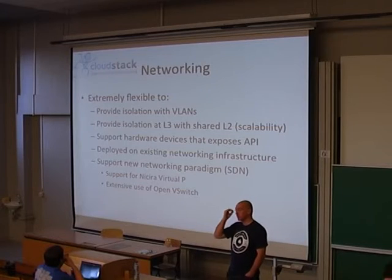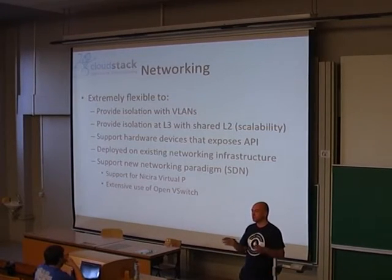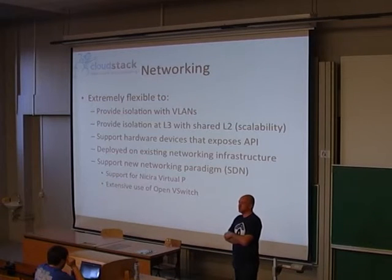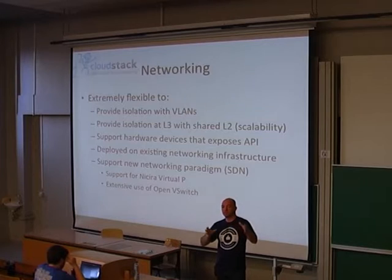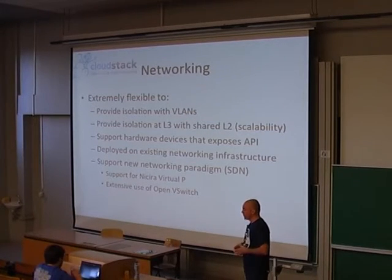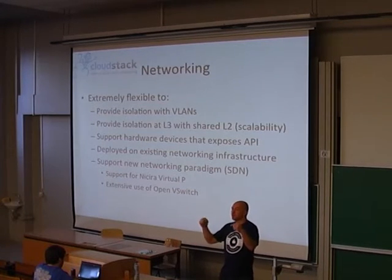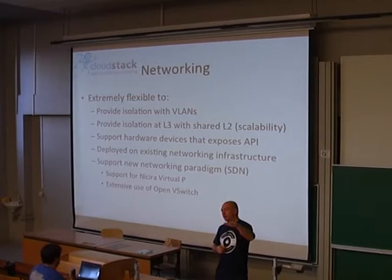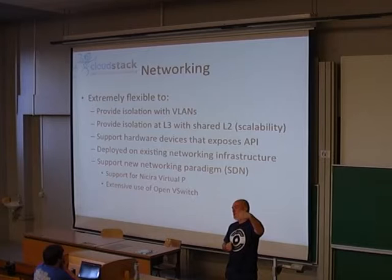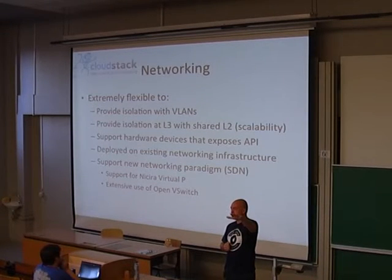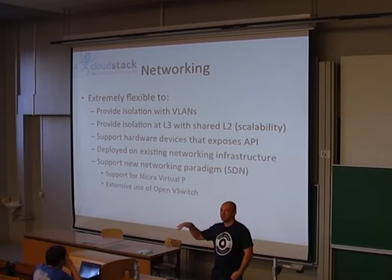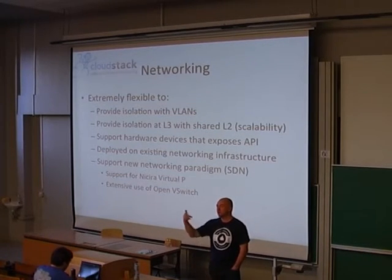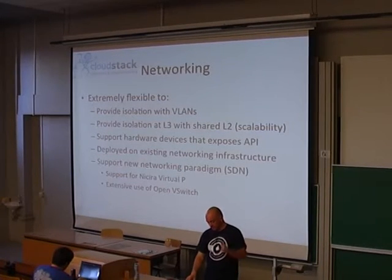The key to understanding CloudStack networking is that the design assumption was multi-tenancy — we wanted to isolate users, both for public cloud and for private cloud where enterprises want to isolate different departments and groups using VLANs. We have two types of network: basic networking and advanced networking. Basic is a shared layer 2 for everybody — people could potentially sniff packets — but we set up isolation using security groups, like the Amazon security groups you know. Advanced networking is where we do VLANs — you pre-configure VLANs on your network and CloudStack allocates them to different guest networks.